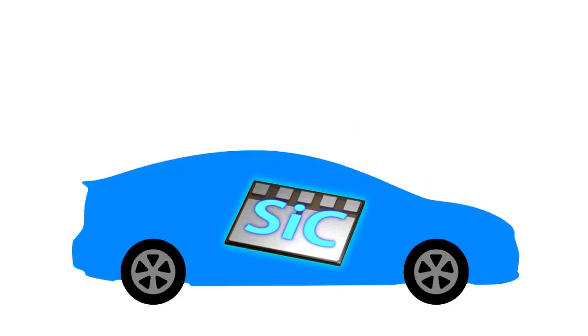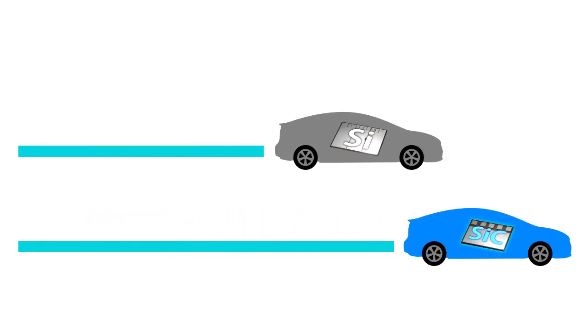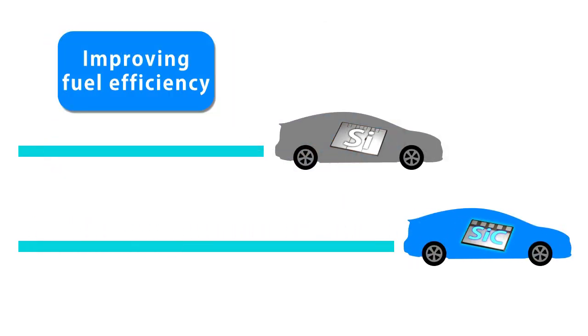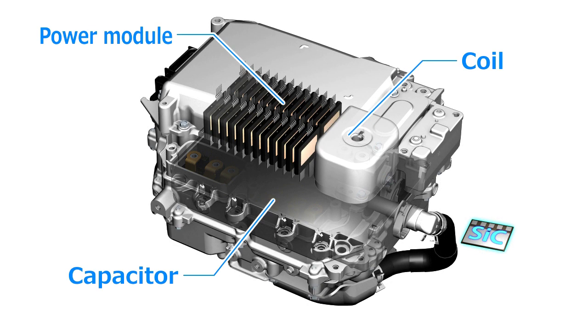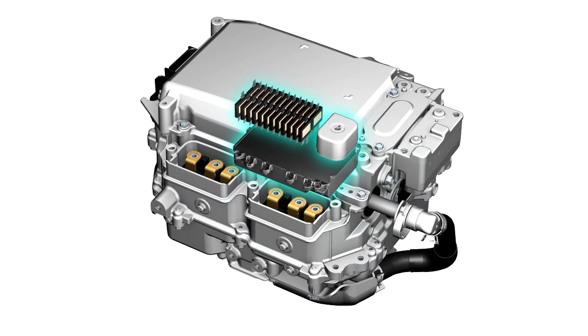Toyota is positioning high efficiency power semiconductors as a key technology for improving fuel efficiency for hybrids and other electric vehicles. Using silicon carbide allows higher frequency control and PCU downsizing.